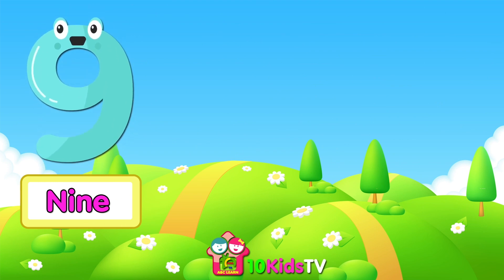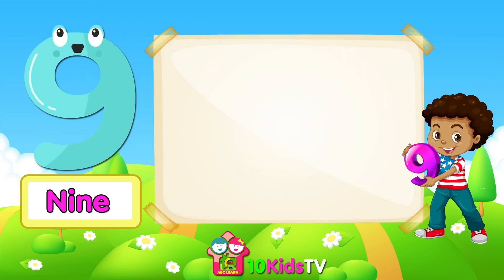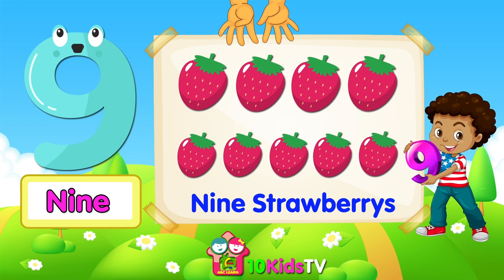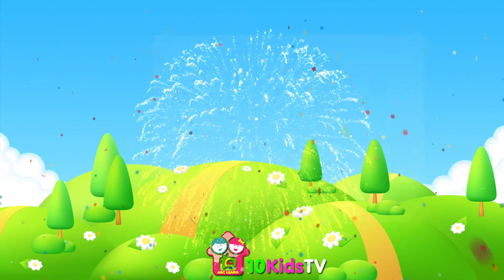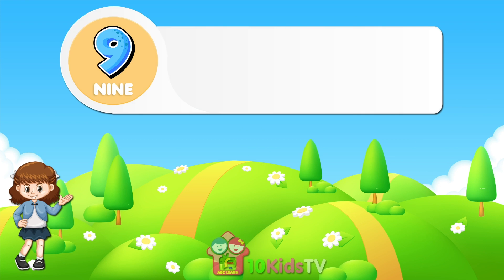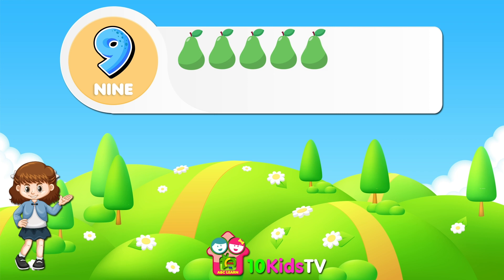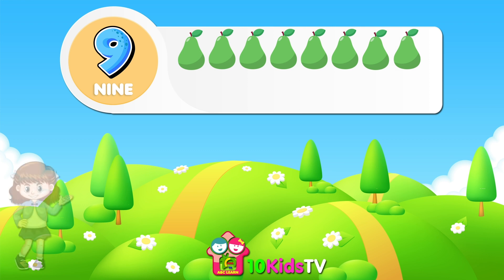Nine. Number nine. Nine strawberries. Example of the number nine. 1 pear, 2 pears, 3 pears, 4 pears, 5 pears, 6 pears, 7 pears, 8 pears, 9 pears.